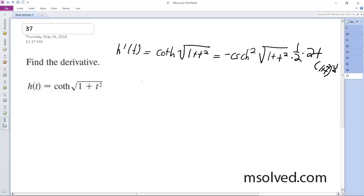so finally, we end up with t times the cosecant h squared of square root of 1 plus t squared all over a square root of 1 plus t squared. That's it.